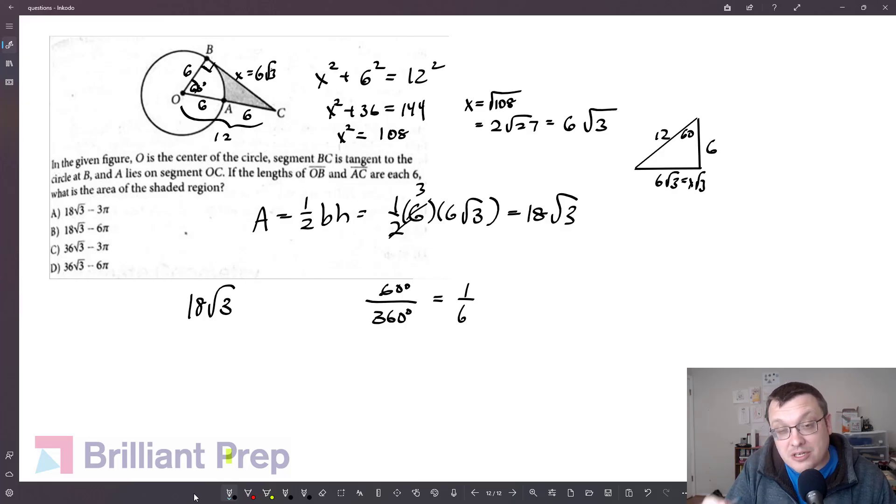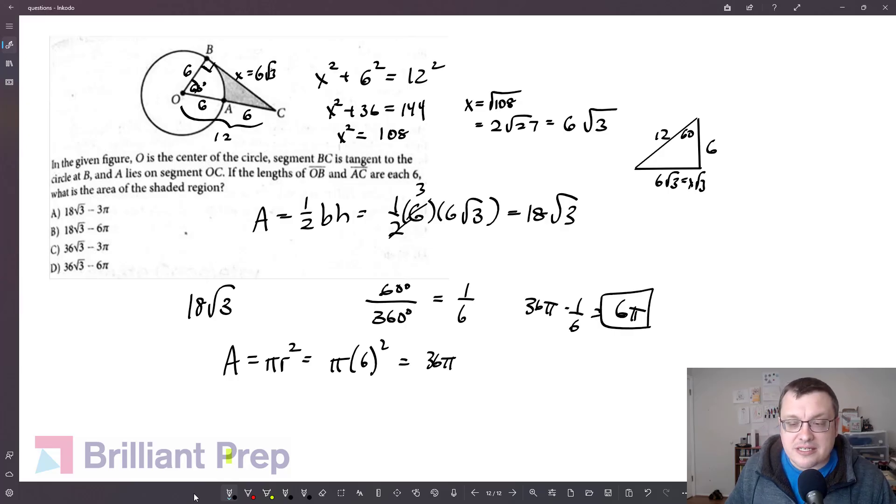It's one-sixth of the central angle, it's one-sixth of the circumference, and in our case, importantly, it's one-sixth of the area of the circle. So the area of a circle is pi r squared. So in this case, it's pi times six squared, which is 36 pi. But I'm going to go ahead and I'm going to multiply that by one-sixth, or divide it by six, either way. We find, therefore, that the area of this sector is six pi.